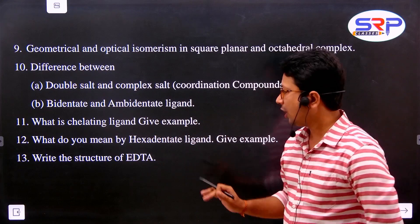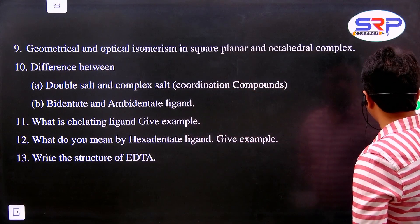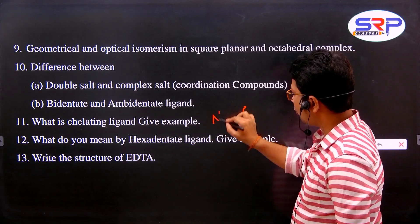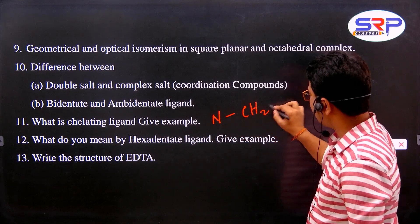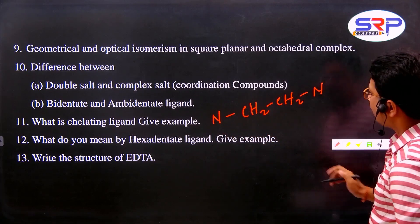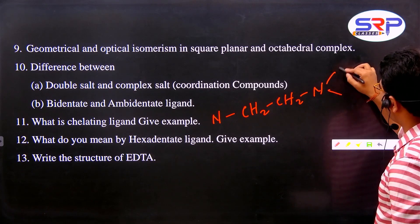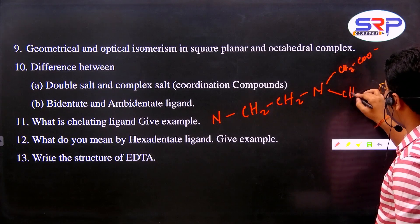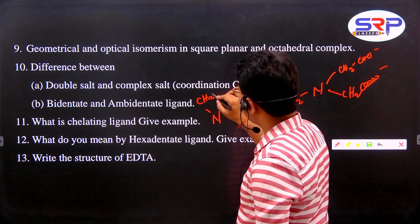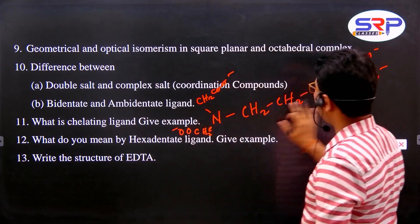Hexadentate ligand - give example. Under hexadentate ligands: EDTA (ethylenediamine tetraacetate). The structure of ethylenediamine: NH2-CH2-CH2-NH2, giving two nitrogen donor atoms. For EDTA (ethylenediamine tetraacetate), four acetate groups are attached: -CH2COO-, -CH2COO-, -CH2COO-, -CH2COO-, making it a hexadentate ligand with six donor atoms total.